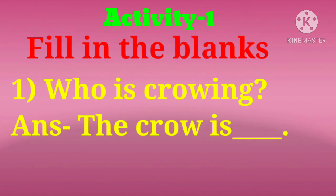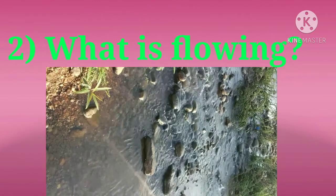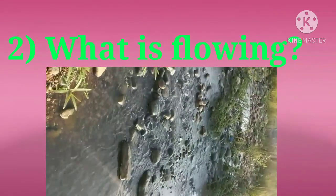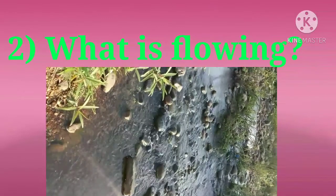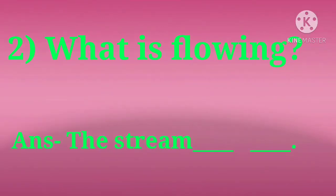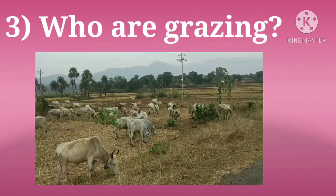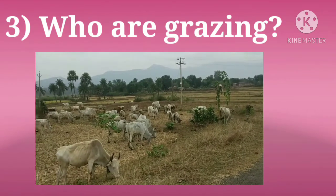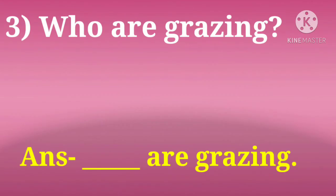First question: Who is crowing? Try to write the answer. The cock is — just use one word here. What is flowing? The answer is: the stream. Try to use two words here. Who are grazing? Look at the picture and fill in the blanks. Dash are grazing.